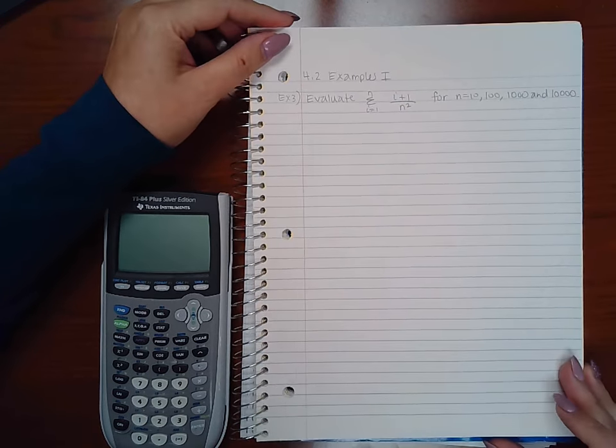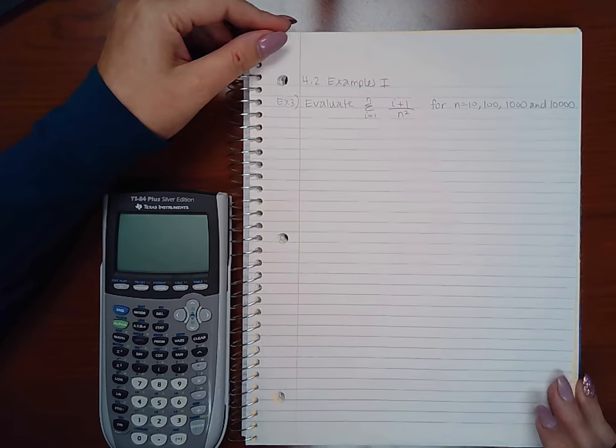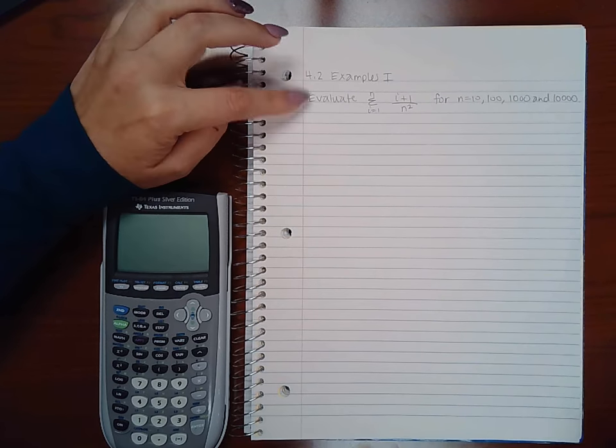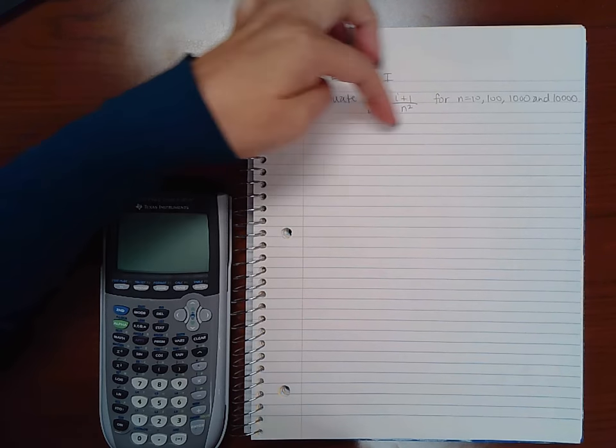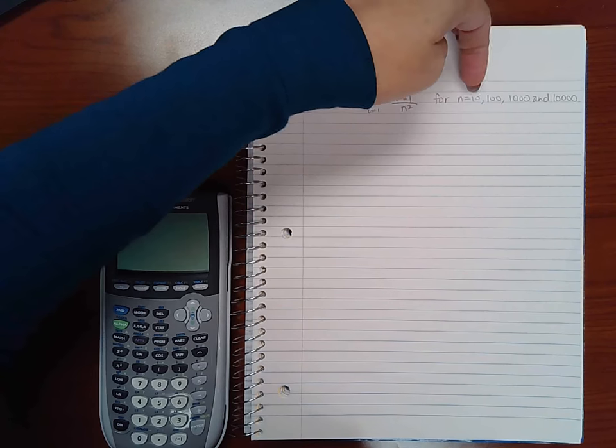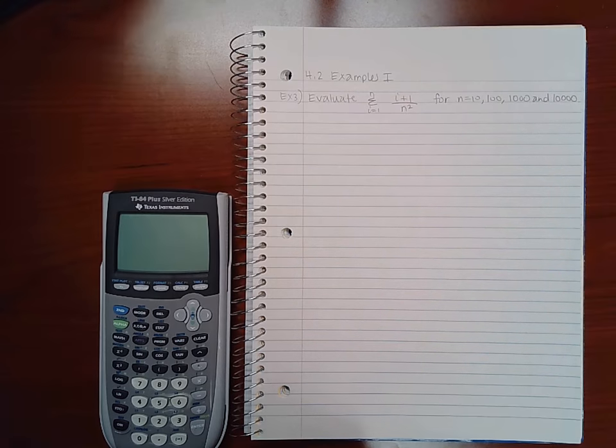This is examples part one for the area section. So this example says evaluate this expression here for n equal to 10, 100, 1,000, and 10,000.